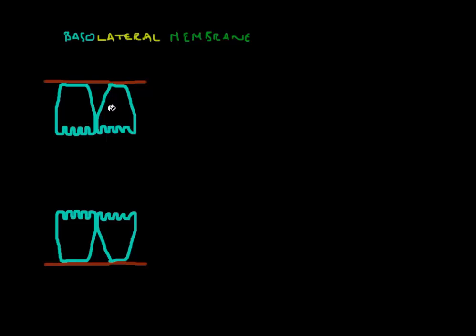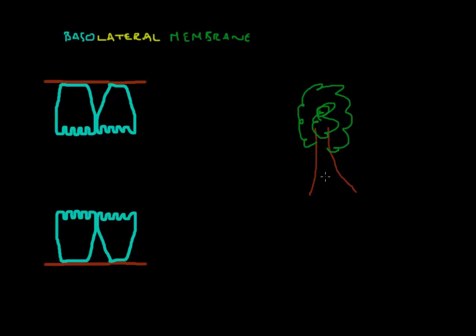When we have to decide on the different parts of the cell and how to name them, one mistake we should not make is to think of a cell like we think of things in nature. For instance, if I draw a tree here — this is a tree maybe in your garden or in the local park — then it would be easy to say that this is the top of the tree and this is the bottom, this is a side and on the other side we can also say this is a side. But you can see that with cells it is not that easy.